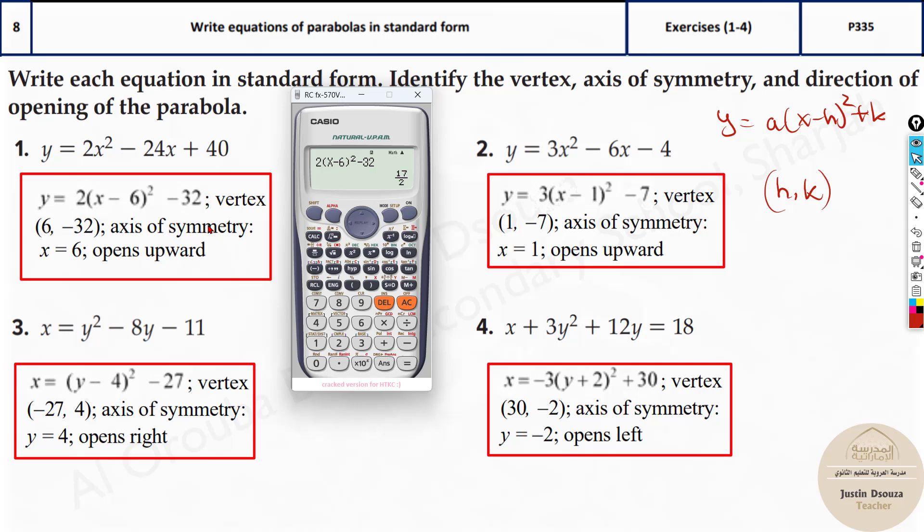Now, one more thing. Your answer must match this equation. Can you see this? a times x minus h the whole square plus k. You can see x must have no coefficient. The coefficient will be outside the bracket. So, 2 into x minus 6 the whole square minus 32.